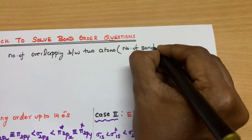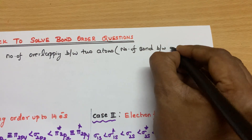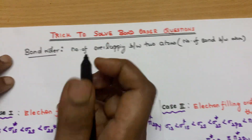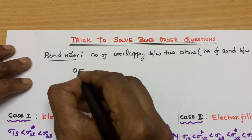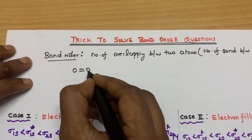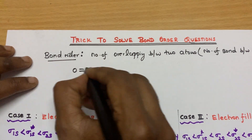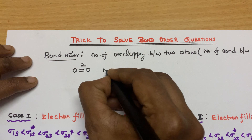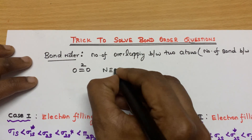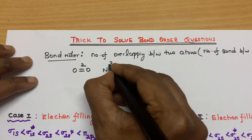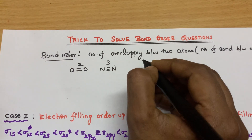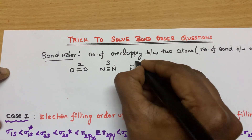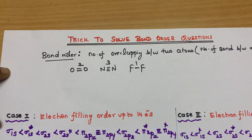The number of bonds between atoms. For oxygen, what is the number of bonds between the two oxygen atoms? It is 2, so the bond order is 2. For nitrogen, it is 3, so the bond order is 3. For fluorine, the bond order is 1.